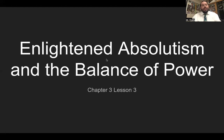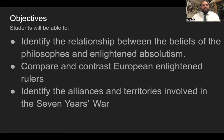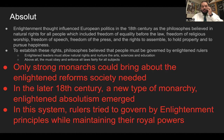It's a long title — the section lesson title is 'Enlightened Absolutism and the Balance of Power.' The warm-up objectives: students will be able to identify the relationship between the beliefs of the philosophes and enlightened absolutism, compare and contrast European enlightened rulers, and identify the alliances and territories involved in the Seven Years War.